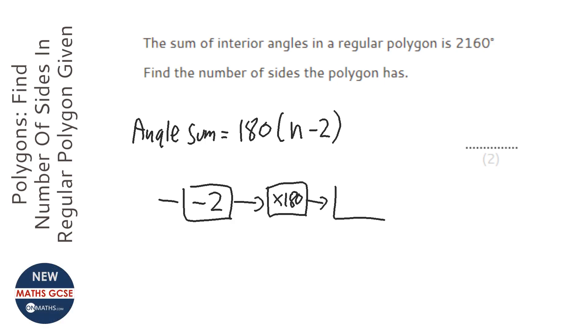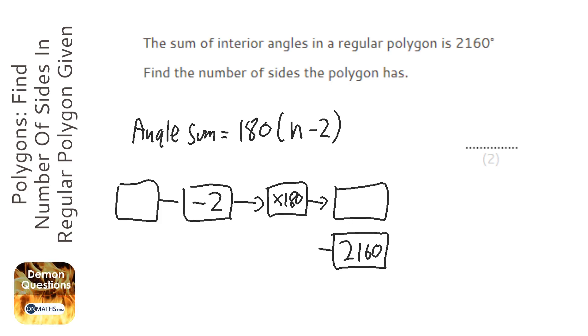And that gives us the angle sum. However, here we're given the angle sum which is 2160 and we're asked to find the amount of sides which is n.